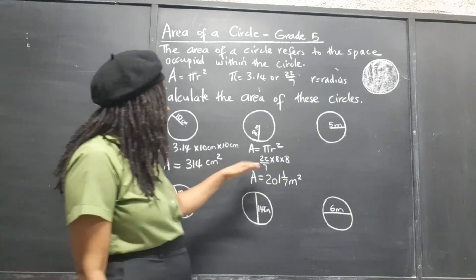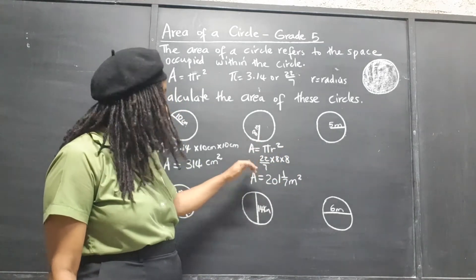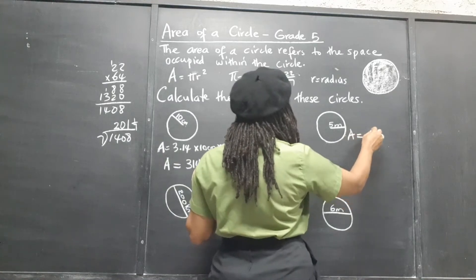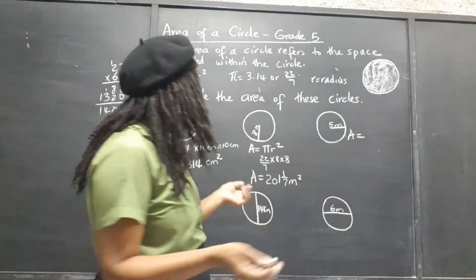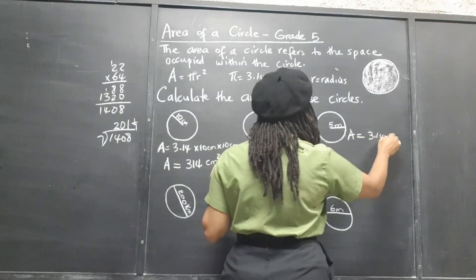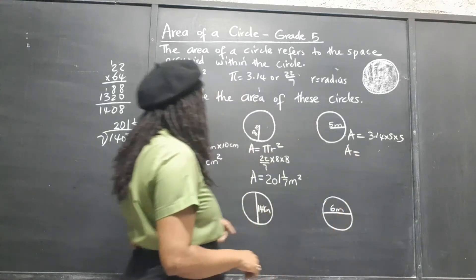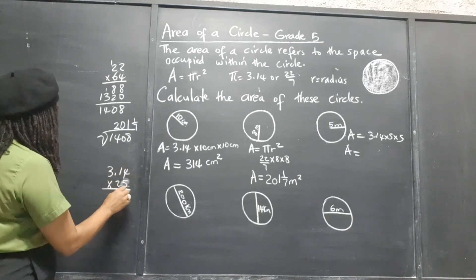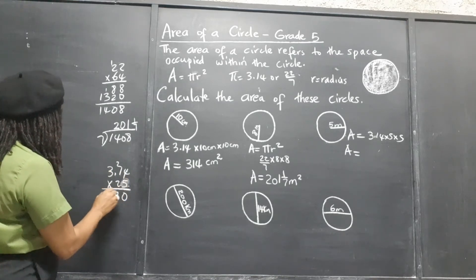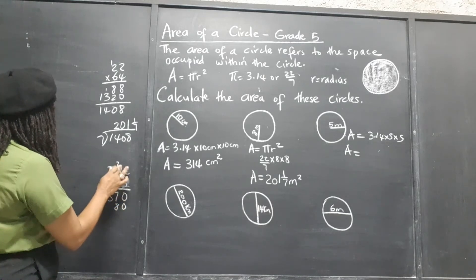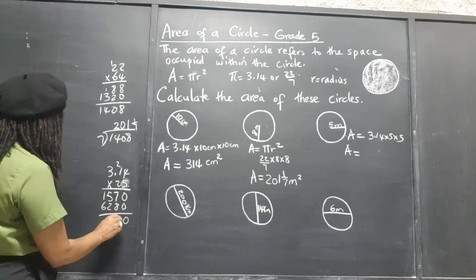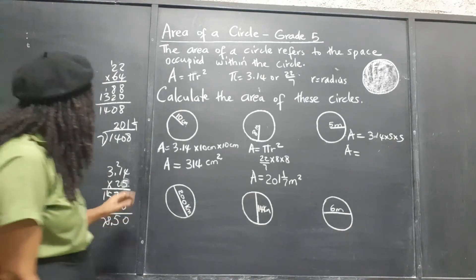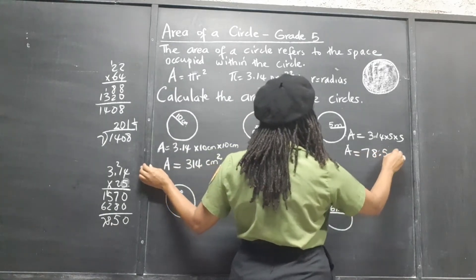Same process for this circle — the radius is 5. We can choose whether to use decimal form. Let's use decimal this time: 3.14 times 5 times 5. 5 times 5 is 25, so we work out 3.14 times 25. That gives us 78.5, so the area is 78.5 meters squared.